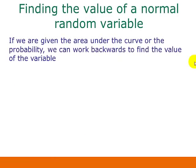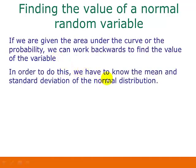And what this means is that if we're given the area under the curve or the probability, then we can work backwards to find the value of the variable. In order to do this, we have to know the mean and the standard deviation of the normal distribution.